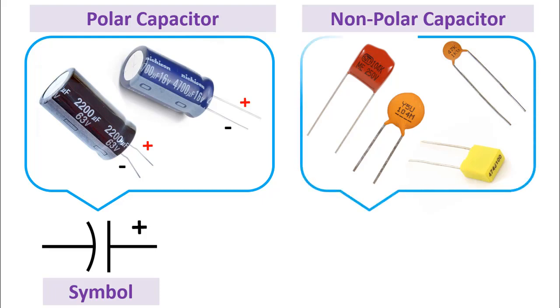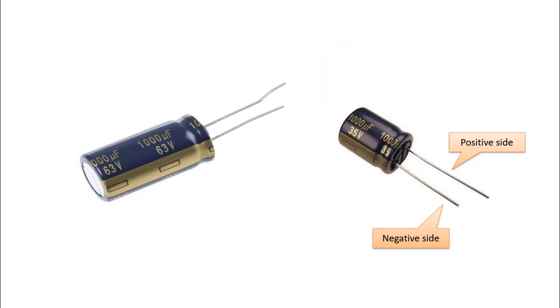The way nonpolarized capacitors are connected to the circuit is not that important. Production capacity values are mostly between picofarad and microfarad. These capacitors are preferred because the direction of the current constantly changes in the alternating current circuits. Ceramic and mica capacitors are included in this group. Their symbol in the circuit can be shown as follows.